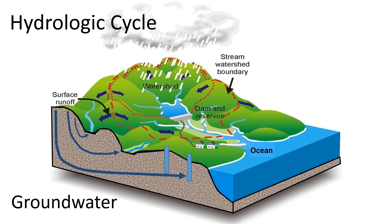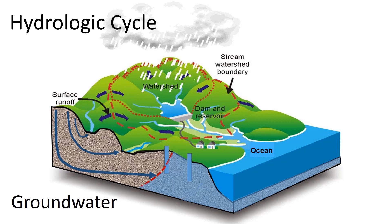Groundwater utilities must be careful that they don't overdraw the aquifer. Overdrawing an aquifer means that they are taking more water out of the aquifer than is being recharged through natural recharge. As shown in our drawing, this can lead to seawater intrusion in coastal communities. By altering the subsurface flow of water, it is possible to shift the hydraulic gradient such that seawater will begin to move inland. Overdrawing an aquifer is not a sustainable operational strategy in the long run, since the wells will eventually dry up.